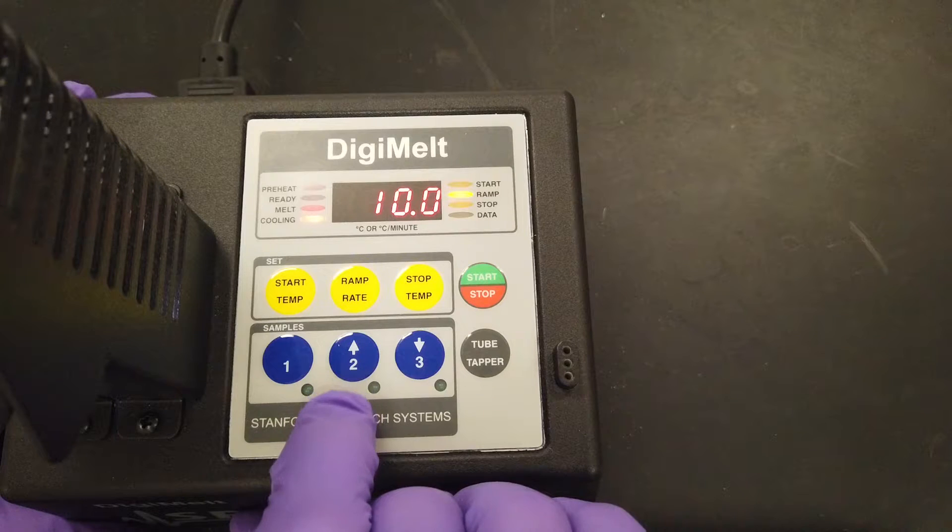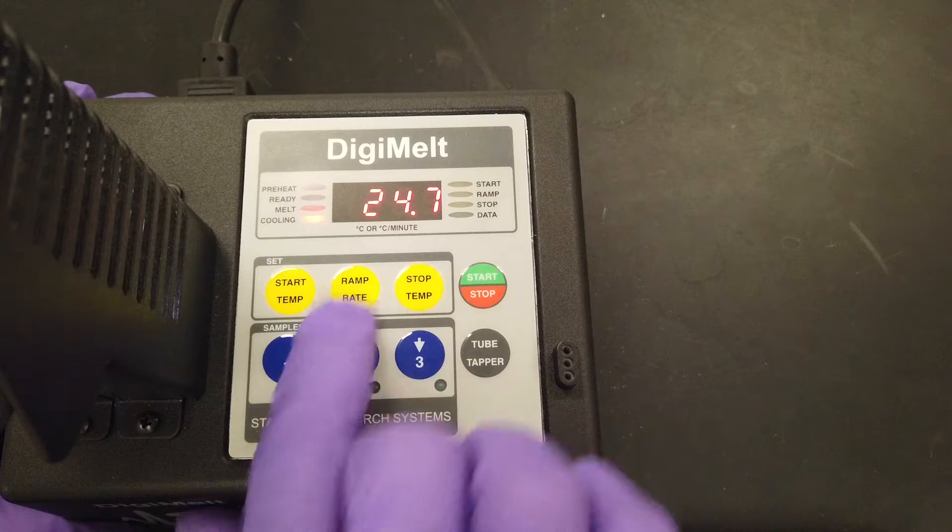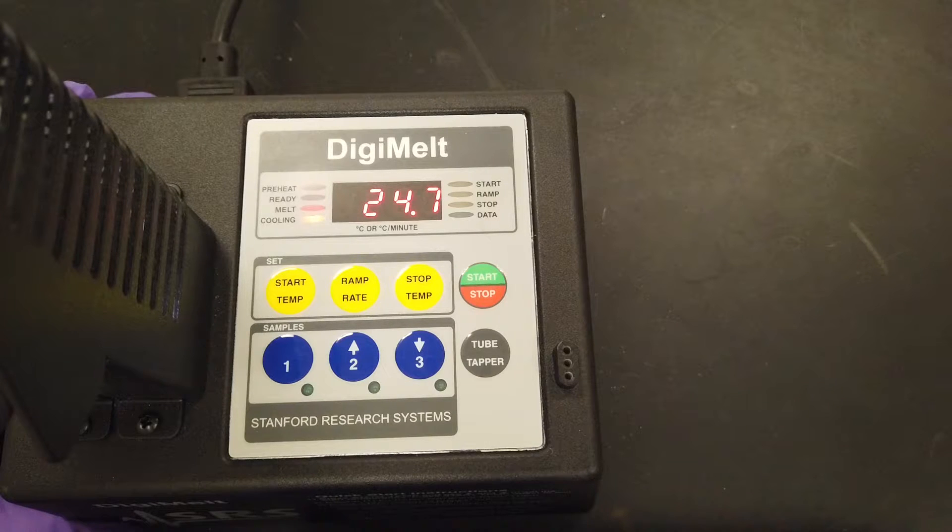It can be useful to set this to 10 when you have a high melting point because this will bring the apparatus up to temperature faster. Just remember to lower it once you're ready to begin.